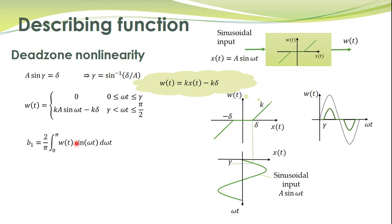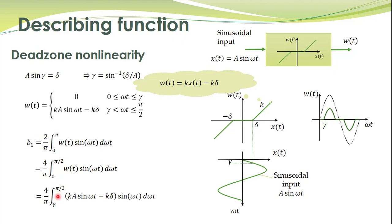We can further write it by integrating from 0 to π/2 and multiplying by another factor of 2, because the area of the curve from 0 to π/2 equals the area from π/2 to π. This integral can be split into two integrals: from 0 to γ, and from γ to π/2. From 0 to γ, w(t) = 0. Then the expression for w(t) from γ to π/2 is written over here.